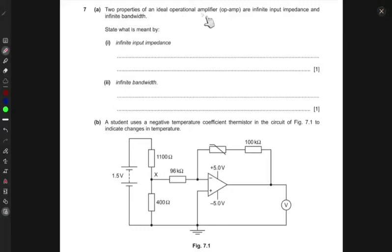Two properties of an ideal operational amplifier (op-amp) are infinite input impedance and infinite bandwidth. State what is meant by infinite input impedance. Infinite input impedance means that there is no current that can enter or leave the input. No current flows through the input.